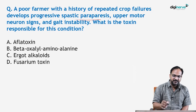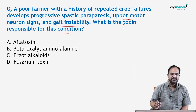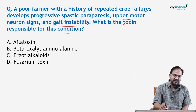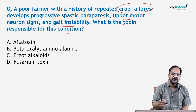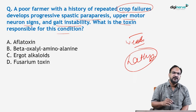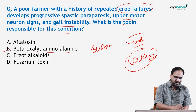Next question: A poor farmer with a history of repeated crop failure presents with progressive spastic paraparesis and upper motor neuron signs with gait instability. The toxin responsible for this condition — again, with crop failure they feed on weeds like Lathyrus sativus — the toxin is BOAA (beta-oxalyl amino alanine). So the answer will be option B.